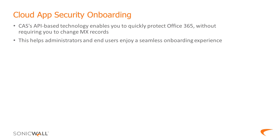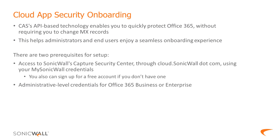CAS's API-based technology makes protecting Office 365 easy without the need to change things like MX records, so both administrators and end users can enjoy a seamless onboarding experience. There are two prerequisites for the setup process. The first is access to SonicWall Capture Security Center through cloud.sonicwall.com using your MySonicWall credentials. If you don't have a MySonicWall account, you can quickly sign up for one for free. You'll also need administrator-level credentials for Office 365 Business or Enterprise.